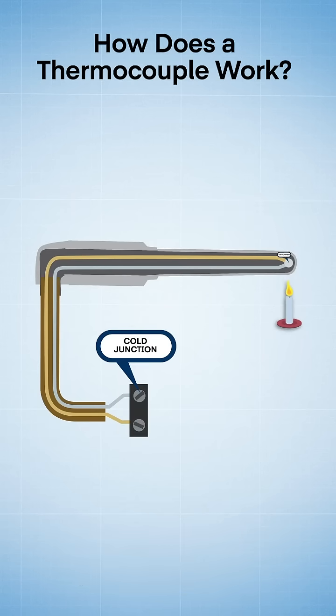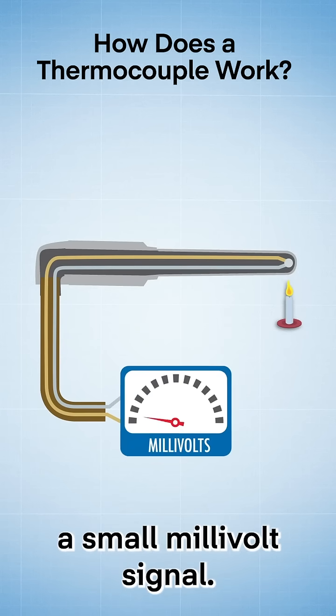This is called the cold junction. Changing the temperature in the hot junction will generate a small millivolt signal.